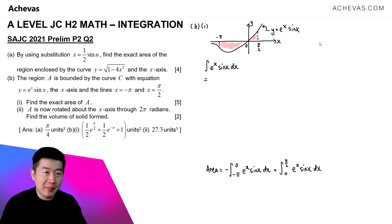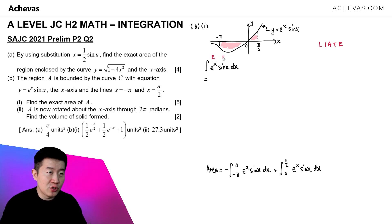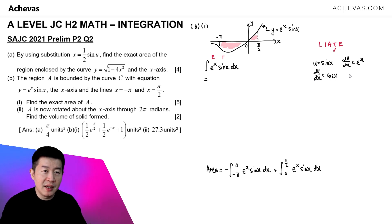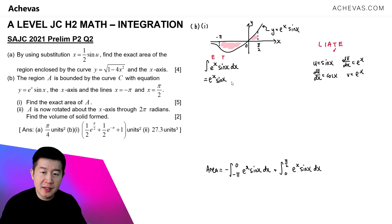We use integration by parts with the LIATE rule. We have an exponential and a trigonometric function. Since trigonometric comes before exponential, we let u = sin(x) and dv/dx = eˣ. Therefore du/dx = cos(x) and v = eˣ. Applying the formula: uv - ∫v(du/dx) dx = eˣsin(x) - ∫eˣcos(x) dx.